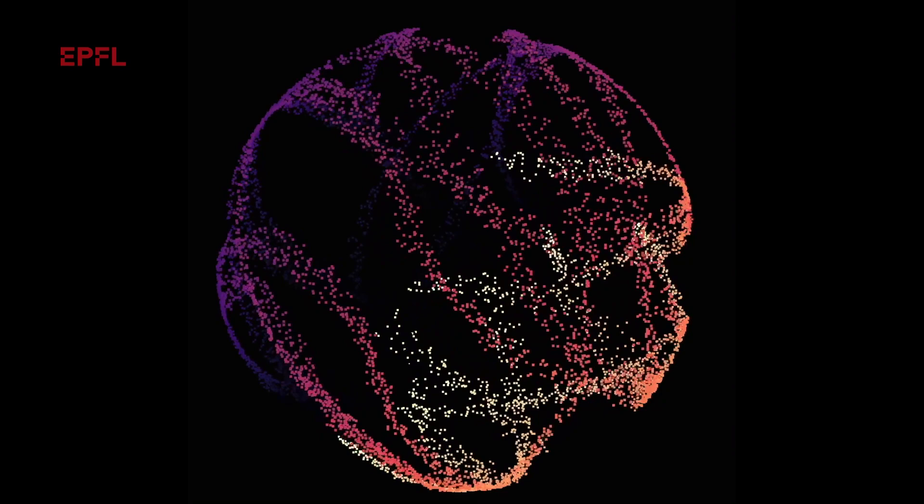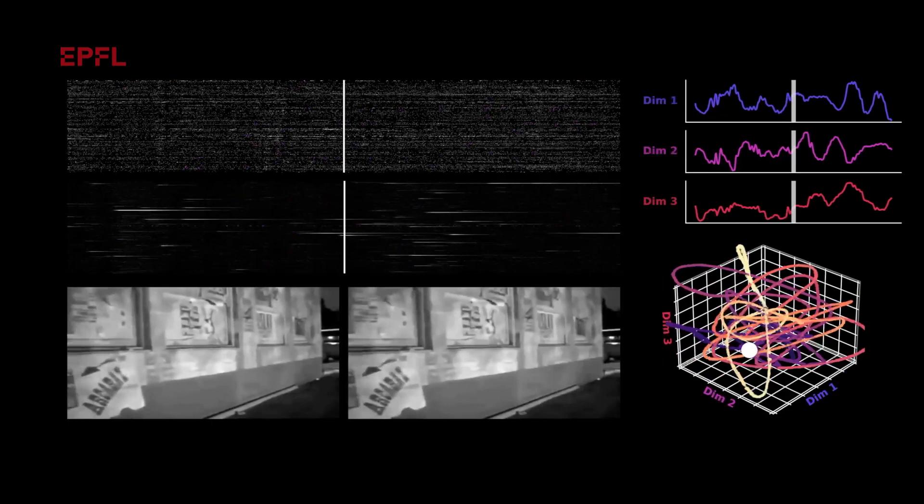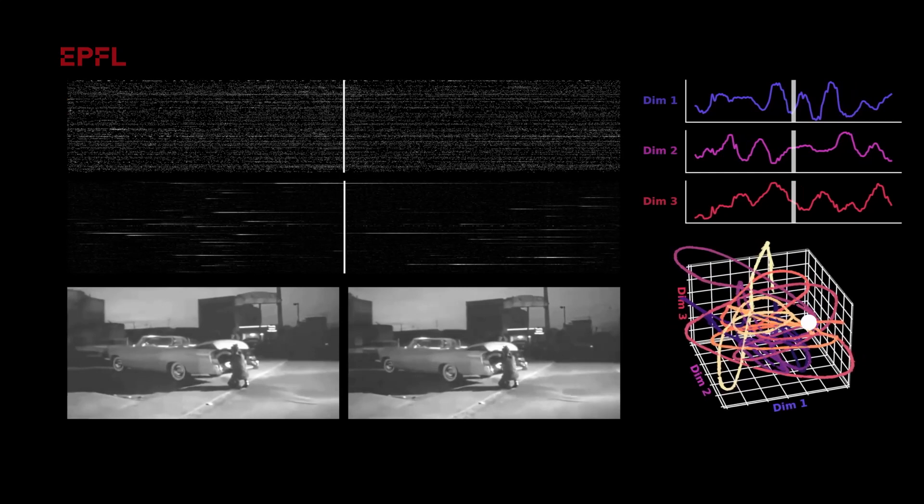We take these genetically engineered mice and record from their brain while they watch movies. This is done for many mice to generate training data for Zebra's base algorithm. Then, for a new mouse whose neural data we've never seen, we run it through the algorithm and it can predict which movie frame the mouse is actually watching.